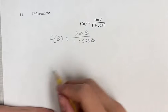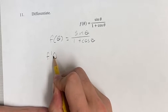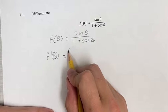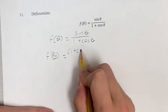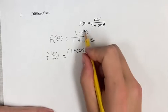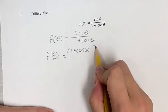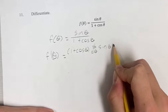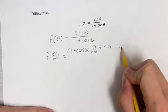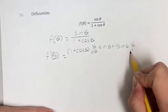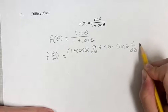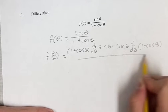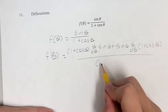So our derivative, f prime, is going to be the denominator, 1 plus cosine theta, times the derivative of the numerator, sine theta, plus the numerator times the derivative of the denominator. This is going to be all over the denominator squared.